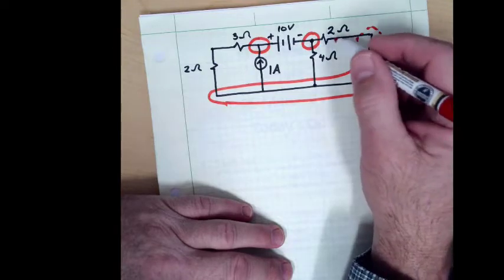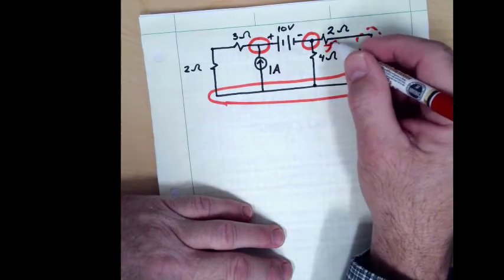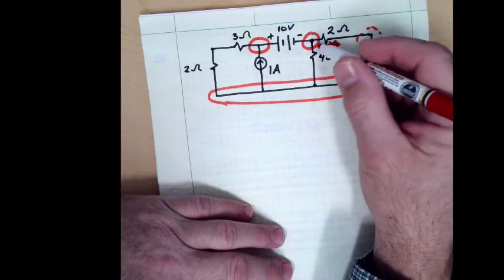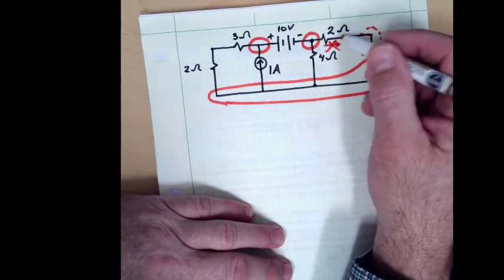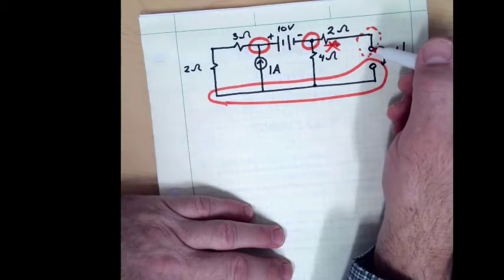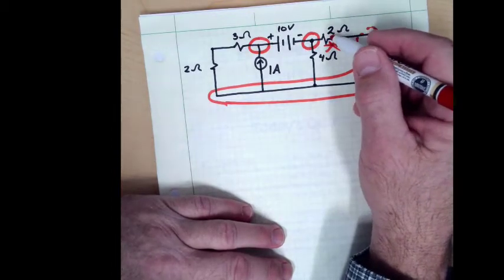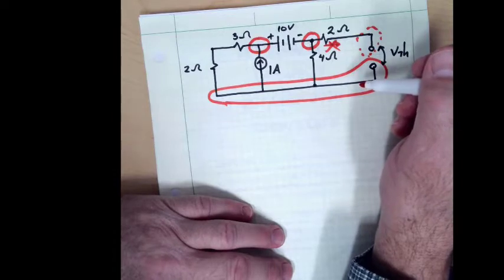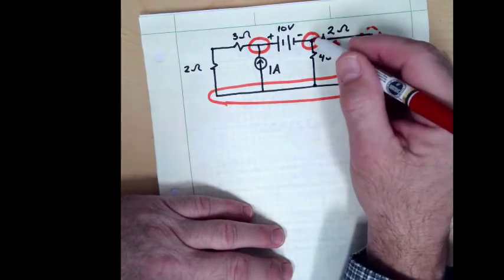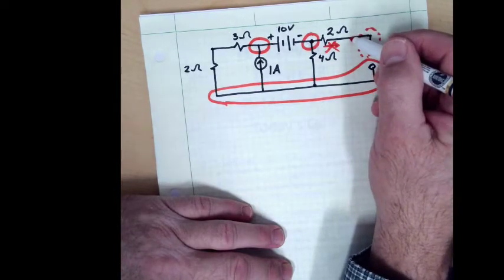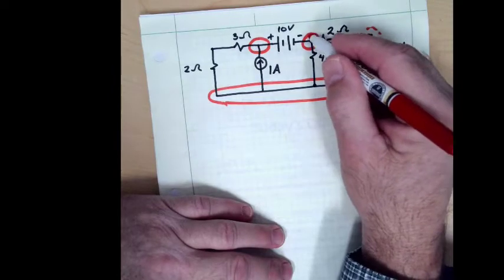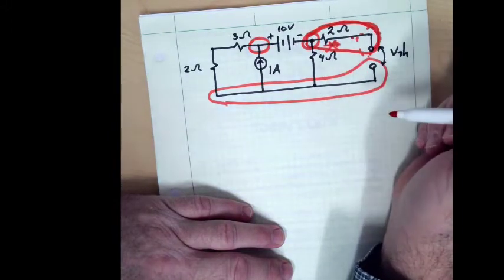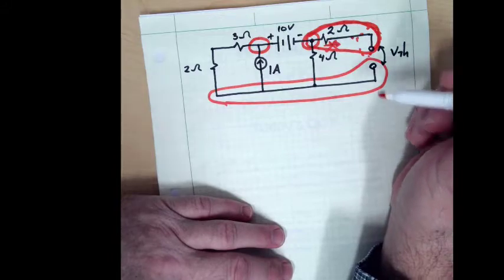The preferred and easiest option is to notice that there is no current through this 2 ohm resistor. If that current does not exist and we sum currents, it just falls away as zero. Also, since there is no current through this 2 ohm resistor, there is no voltage drop across it. If there is no voltage drop, the voltage on this side equals the voltage on that side. So we can just grow our circle to include this whole end, which simplifies things.